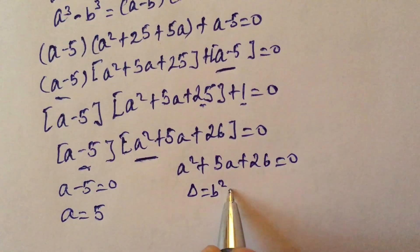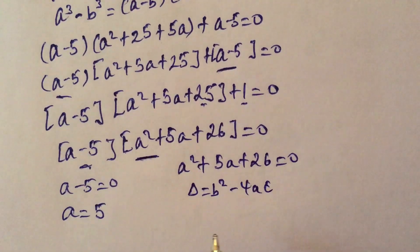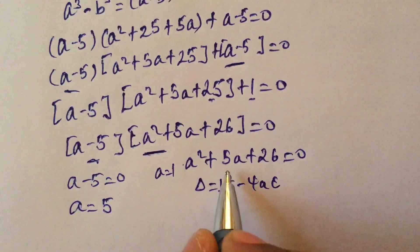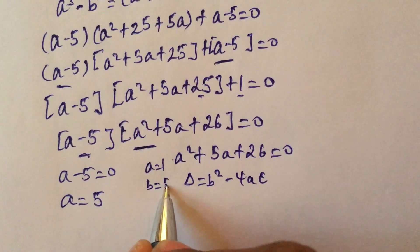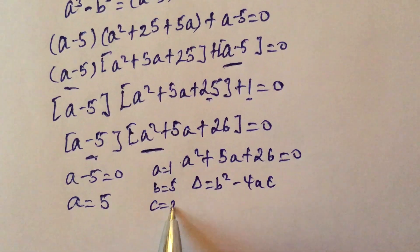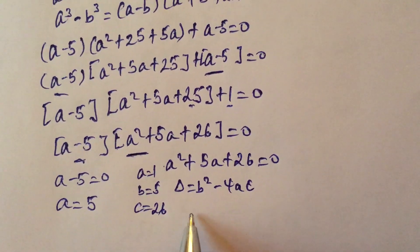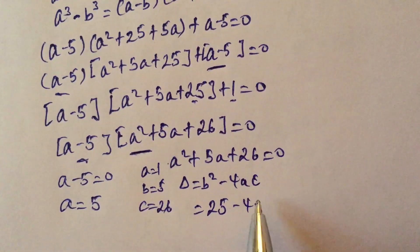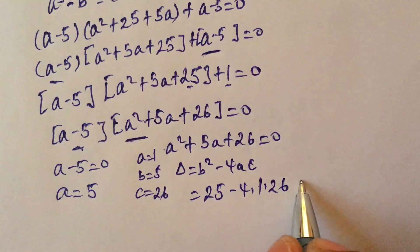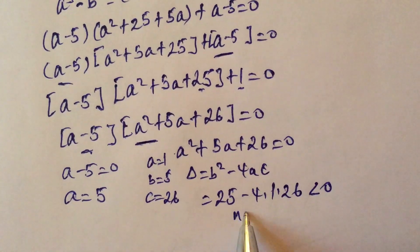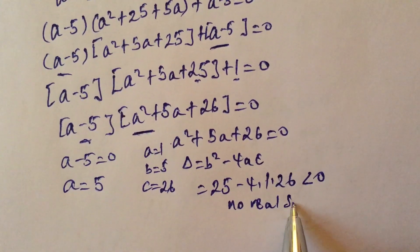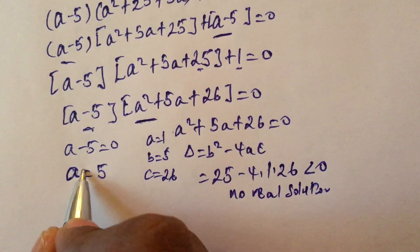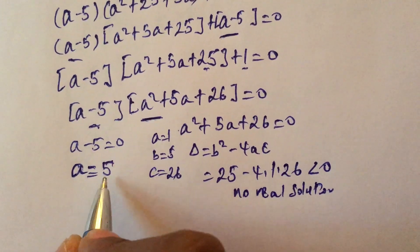The discriminant is b squared minus 4ac. With a equals 1, b equals 5, c equals 26: discriminant equals 25 minus 4 times 1 times 26, which is less than 0. So there is no real solution from the quadratic. Therefore, the only solution of the equation is a equals 5. Thank you.